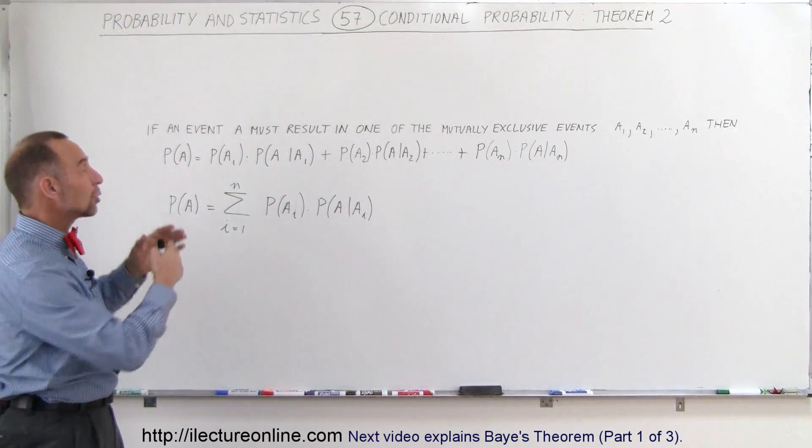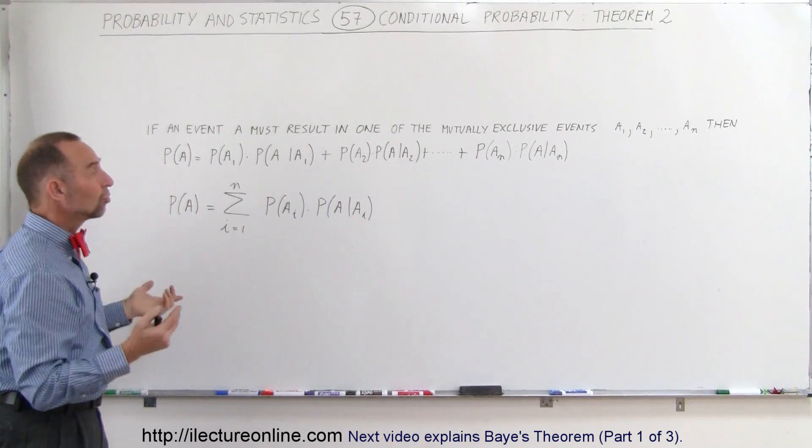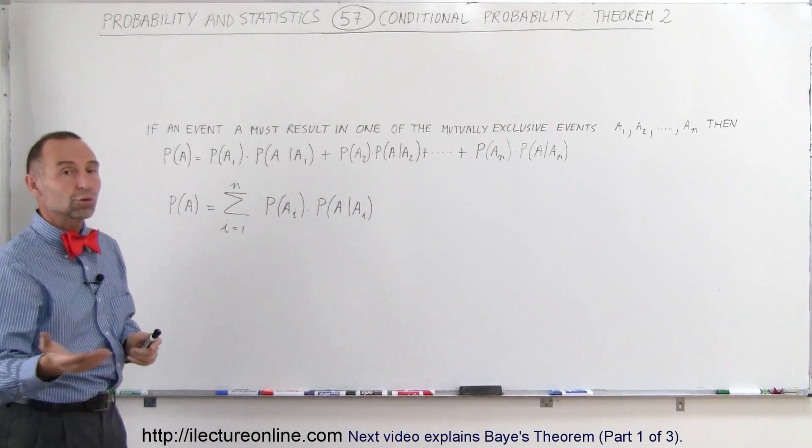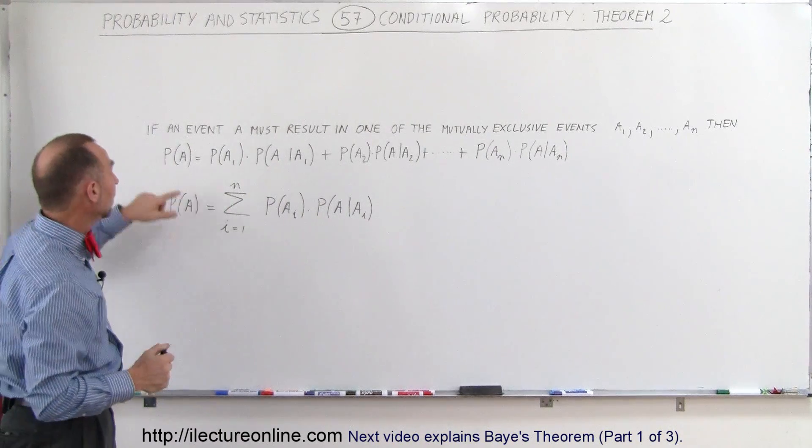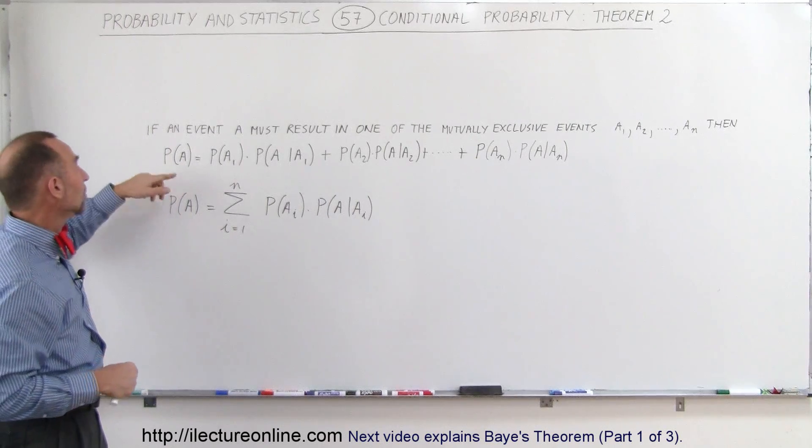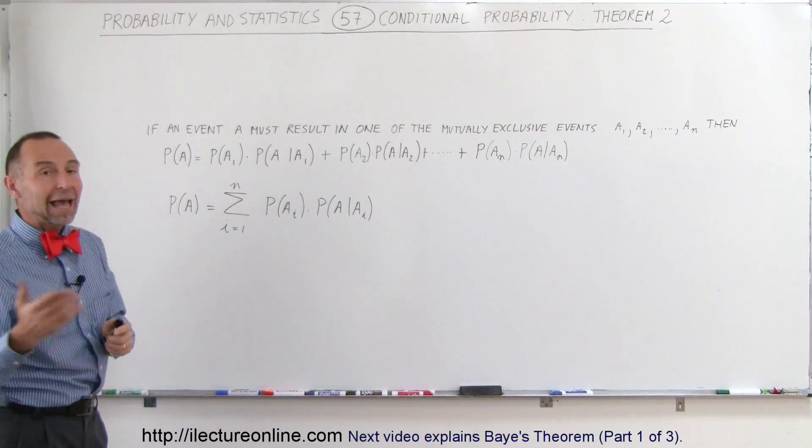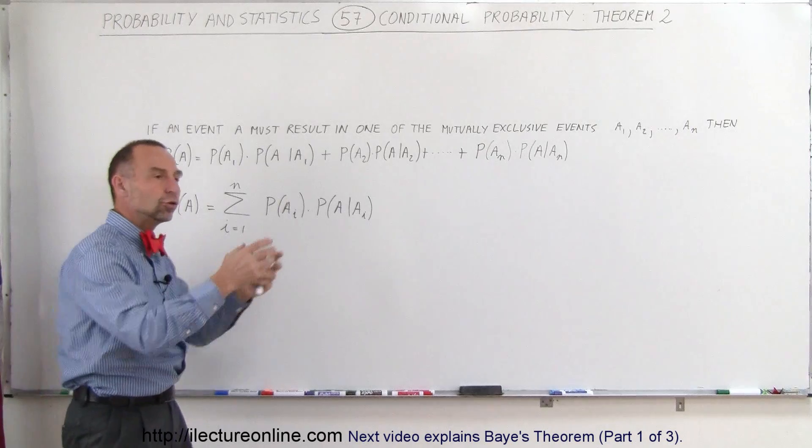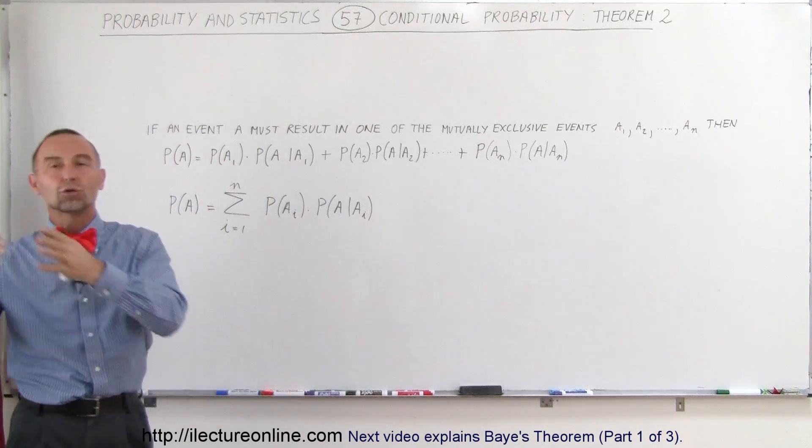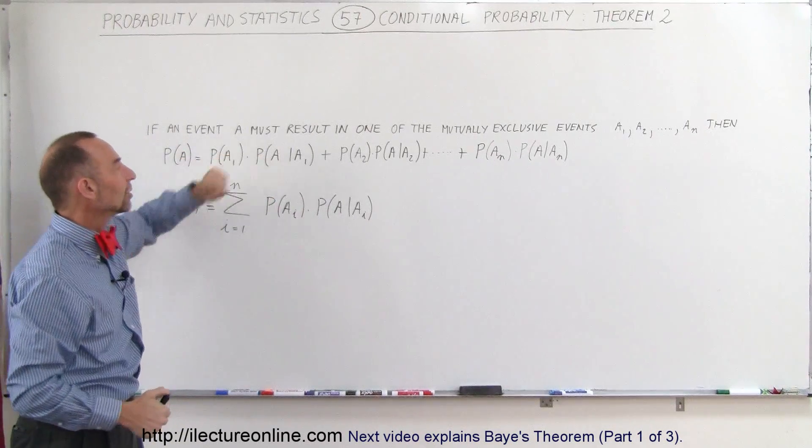So if let's say you toss a coin and it can either be heads or tails that would be an event A and then after you, if you toss a heads you'll do one thing, if you toss tails you'll do another thing then this is really what this is about.